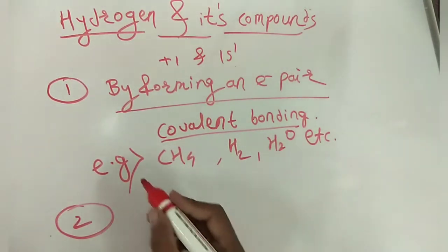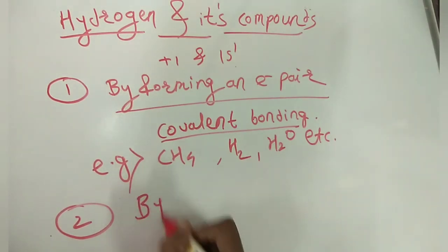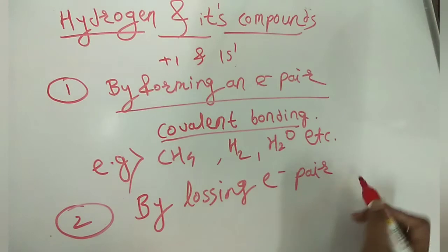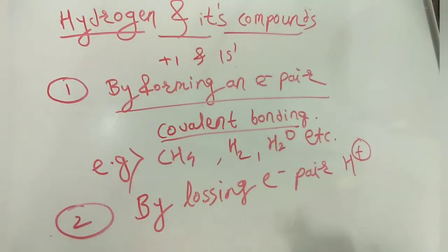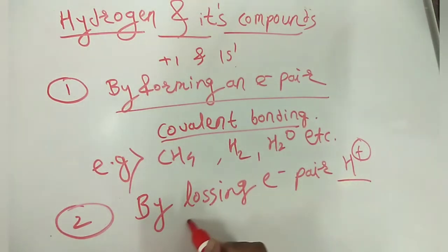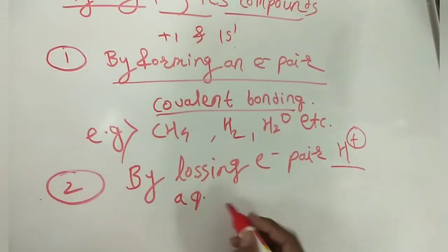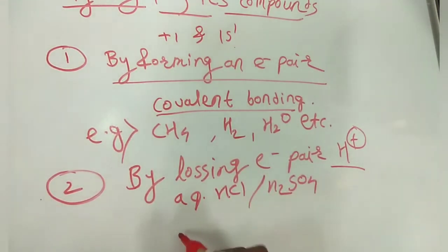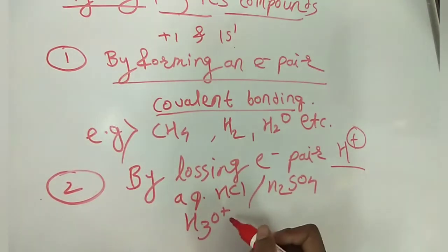The second way is by losing an electron to form H⁺, that is the proton. After losing the electron, it carries a positive charge. H⁺ is a very small species with very high polarization power and distortion power; it distorts the electron cloud of another atom. It does not exist singly or in the free state — for example, in aqueous solution of HCl or H₂SO₄, the proton exists as H₃O⁺ ion.